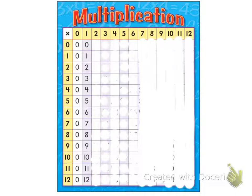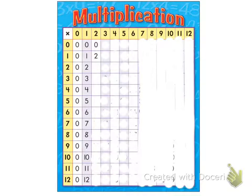You have a multiples chart in your student notebook, and here's an example of mine. So what's the first multiple of two? Well, two times zero is zero, and the first multiple of two is two times one is two.